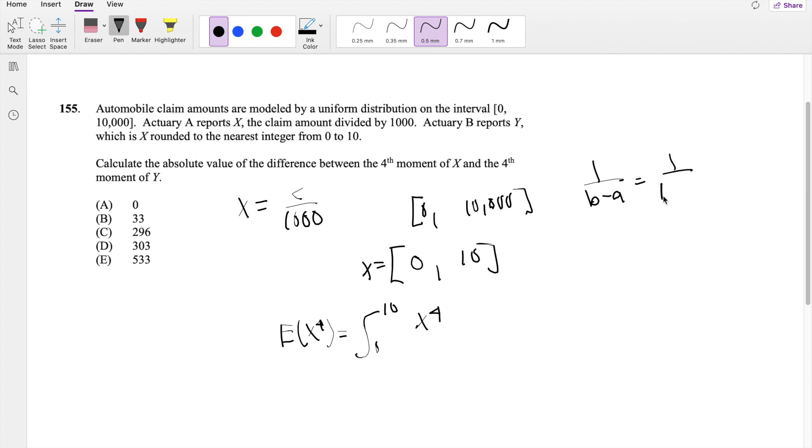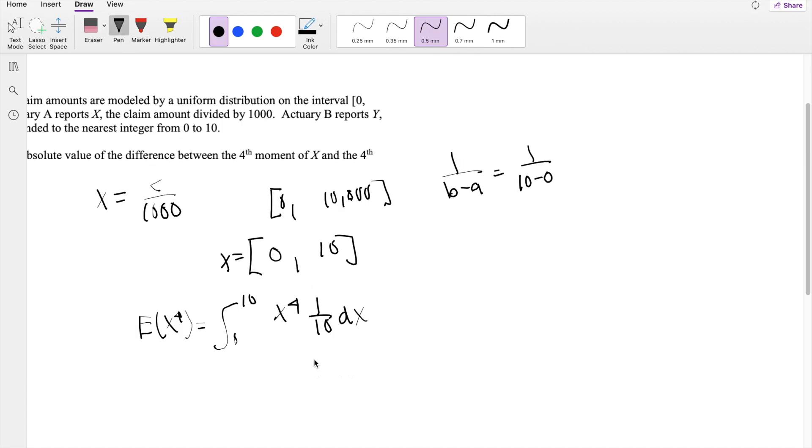So we have the integral of X^4 times 1/10 dx. Taking the integral, this becomes X^5 divided by 50, evaluating from 0 to 10. This equals 2,000.